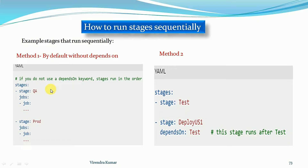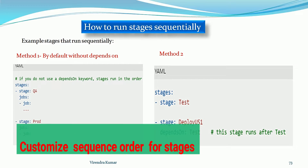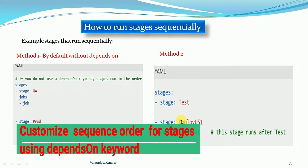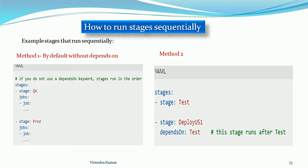Now if you want to define stages with the dependsOn keyword - that's Method 2 - the dependsOn keyword gives us the flexibility to define stages in a sequential or parallel manner. When you're working on a big project and you have around five stages, and out of those five stages you want to execute some sequentially and some in parallel, in that condition we use the dependsOn keyword. It gives you the way to execute your stage, job, or steps in a sequential or parallel manner.